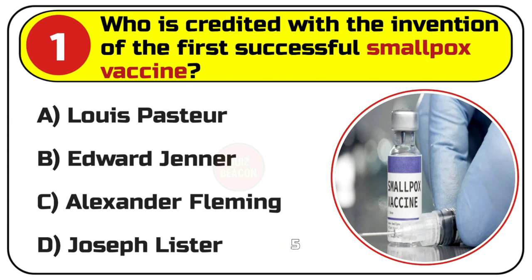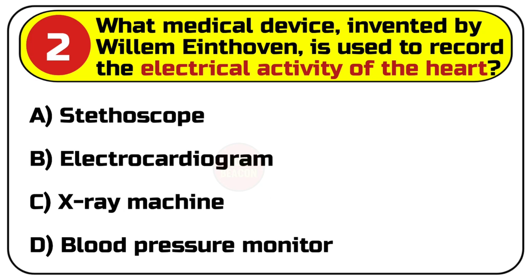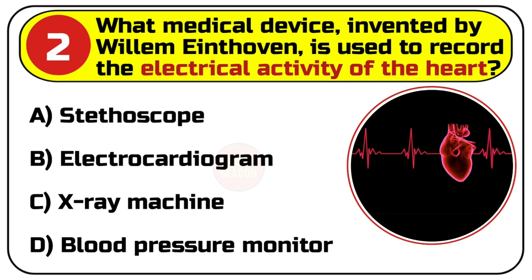Correct answer is B. Edward Jenner. Question number 2. What medical device, invented by Willem Einthoven, is used to record the electrical activity of the heart? Options are: A. Stethoscope, B. Electrocardiogram, C. X-ray machine, D. Blood pressure monitor.